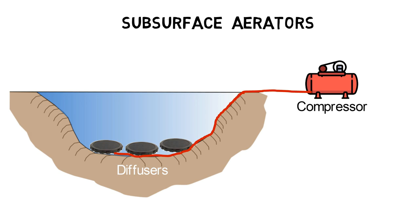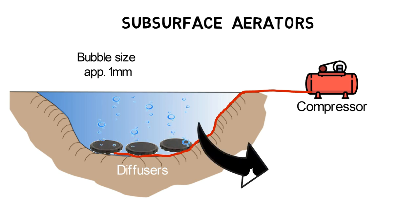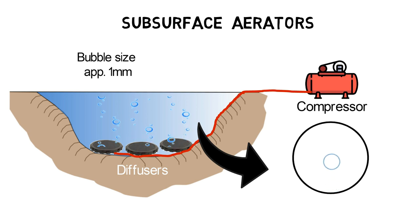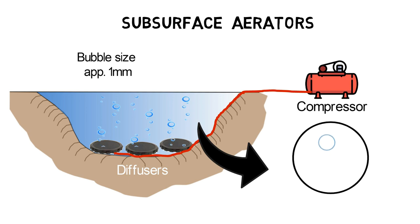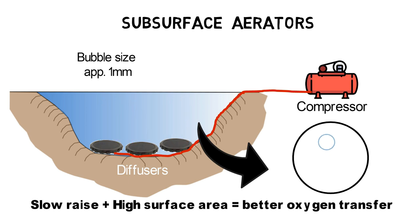The membrane perforation of fine bubble strip diffusers is microscopically small and released bubbles have a size of about one millimeter. Compared to surface aerators, fine bubble diffusers have in general a better oxygen transfer rate. Fine bubbles have a large surface area and they rise very slowly, which means that their contact time with water is much longer compared to propelled water droplets.